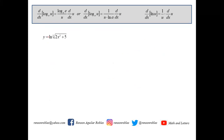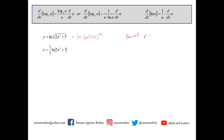For y equals ln of the cube root of (2x³ + 5), we simplify using the logarithm power property. The cube root means the exponent is one-third, so ln(2x³ + 5)^(1/3) can be written as one-third times ln(2x³ + 5). This makes differentiation easier.